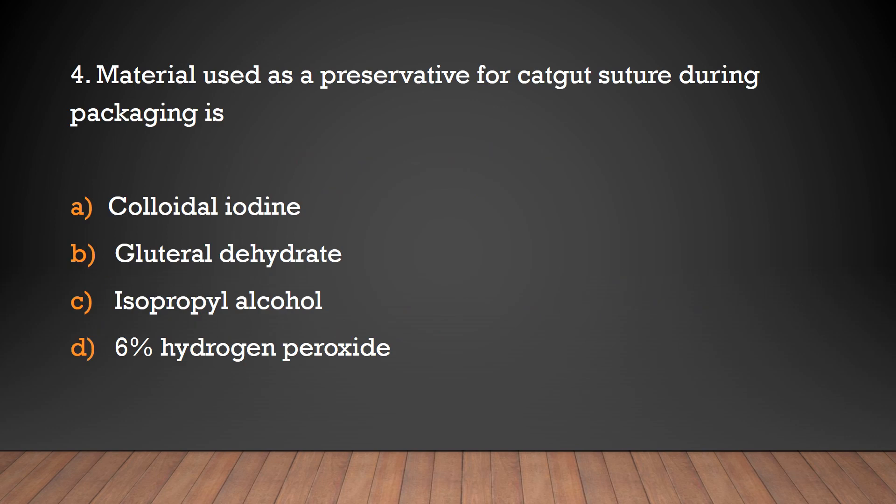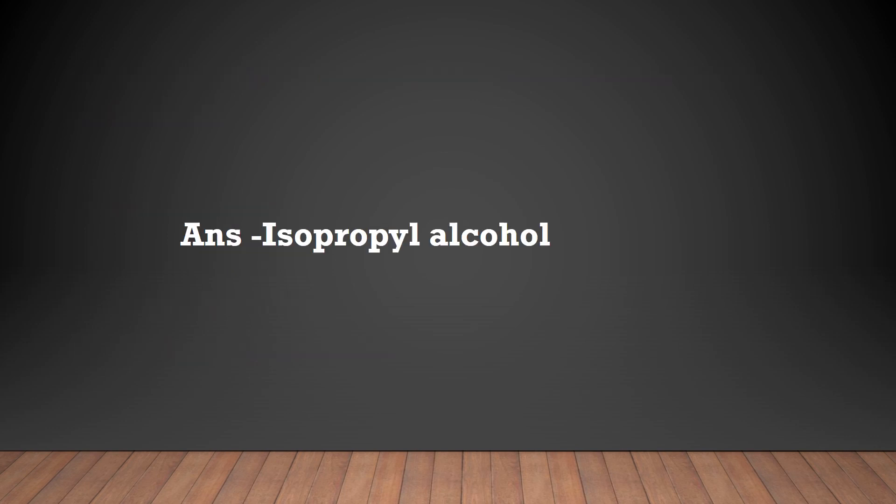The preservative used for catgut during packaging is: colloidal iodine, glutaraldehyde, isopropyl alcohol, or 6% hydrogen peroxide. Answer: Isopropyl alcohol.